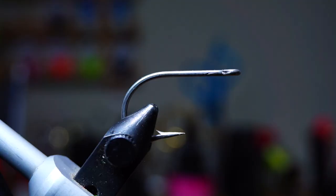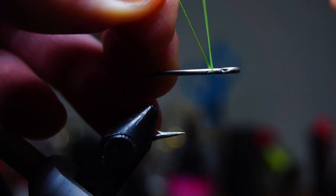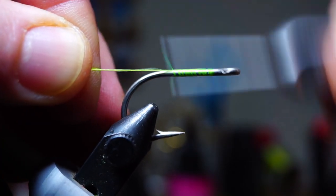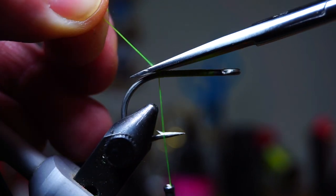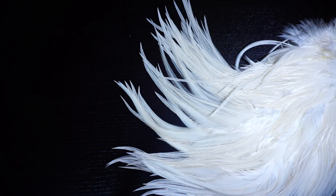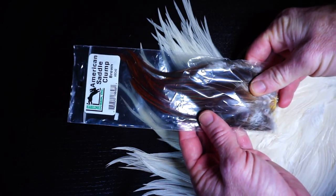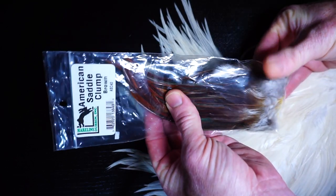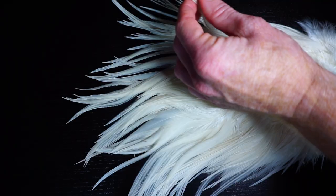Start your thread near the eye of the hook and then bring it back to the bend before snipping off the tag end. You'll want two white rooster saddle hackles. I have this beautiful saddle here, but you could also use an American saddle pack like this one, just make sure it's in white.